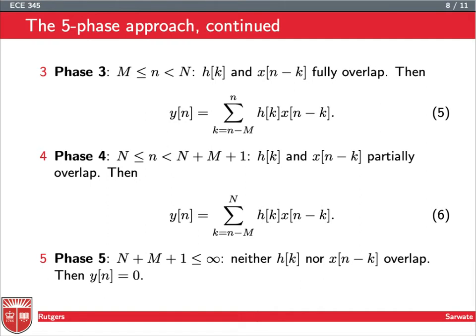Phase 3, we have complete overlap. Remember we're assuming h is longer than x. That happens when n is between m and capital N, because capital N is the end of h. So we have 0 and capital N, and as long as little n is less than N, we're going to have a complete overlap between x and h. Since the first term of x is n-m, we get a sum from n-m to n of the convolution term.